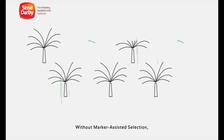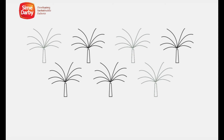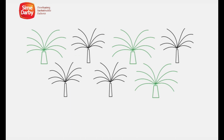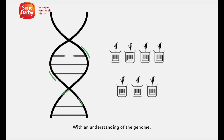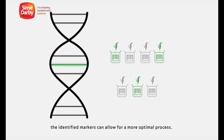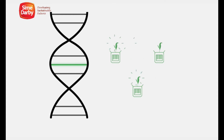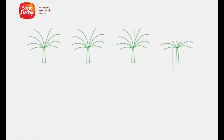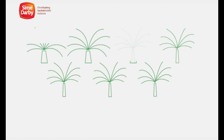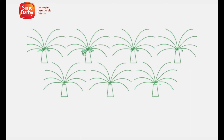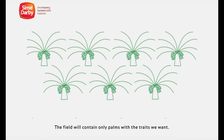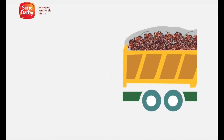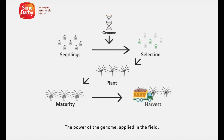Without marker-assisted selection we would plant all the seedlings — those with good traits and those with bad traits. With an understanding of the genome, the identified markers can allow for a more optimal process. Once the best are selected, they are planted in the field. The field will contain only palms with the traits we want. The harvest will be plentiful. The power of the genome applied in the field.